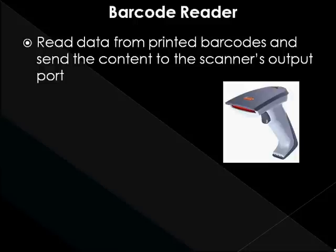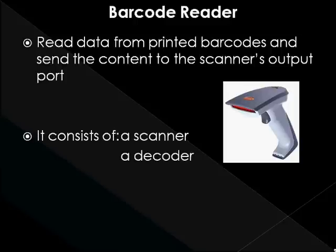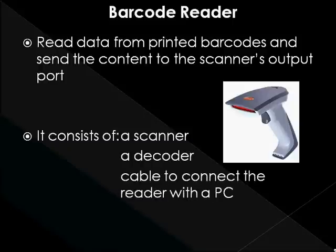Supermarkets use barcode readers to read data from a product item's barcode and transfer it to the processor to determine price and product details. A barcode reader consists of a scanner, a decoder (either built-in or external), and a cable used to connect the reader with a computer. Because a barcode reader merely captures and translates the barcode into numbers and letters, the data must be sent to a computer so that a software application can make sense of the data.